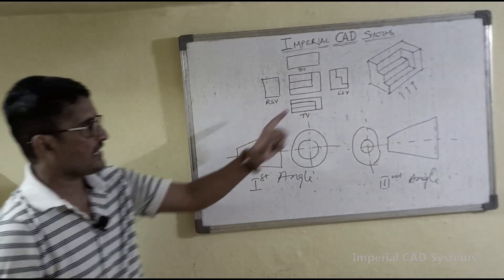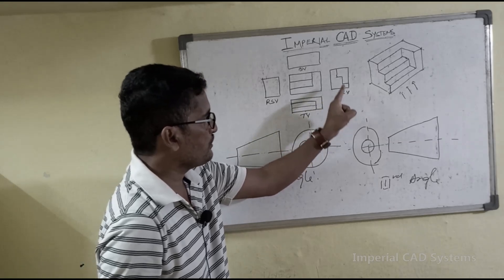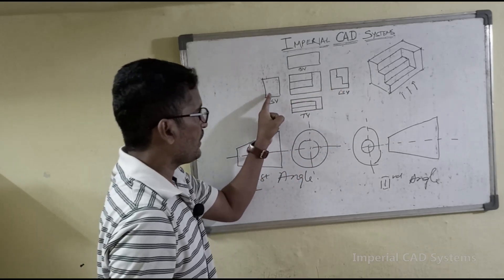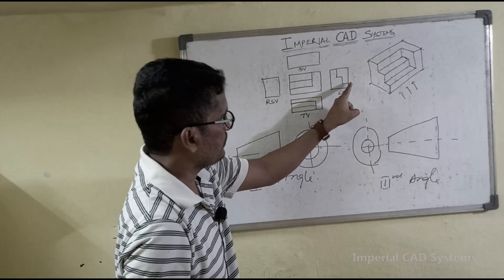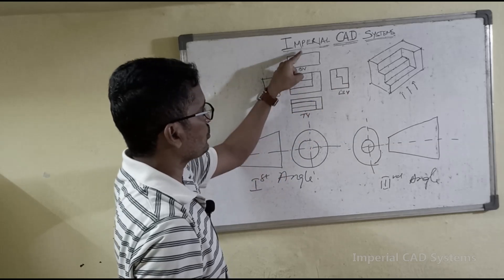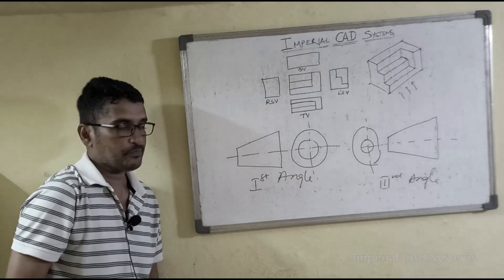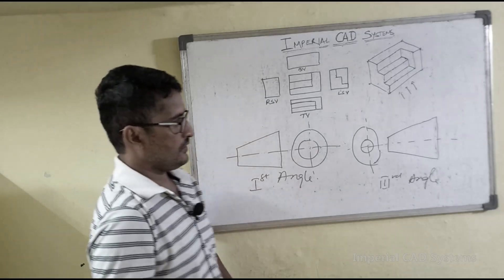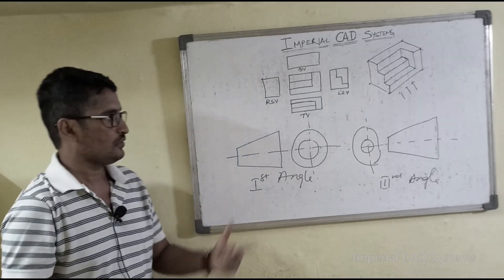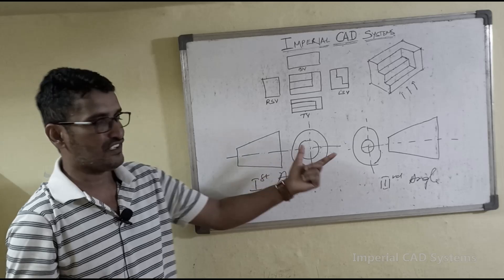And for third angle standard: the left side view is shown to the left side, the right side view to the right side, the top view to the top, and the bottom view to the bottom. We need to follow the angle of projection.